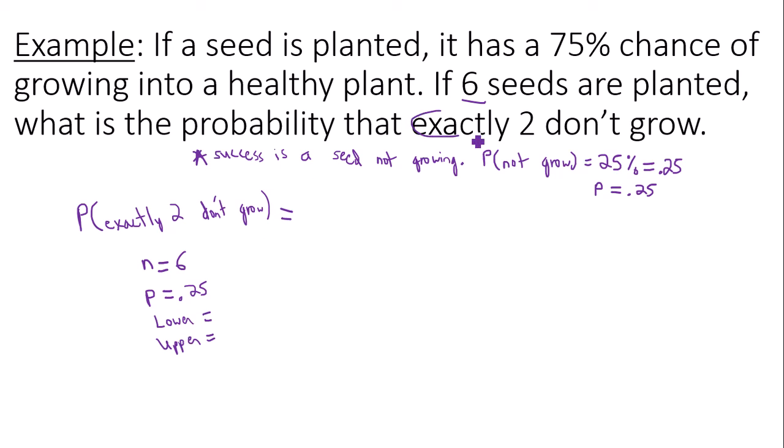So how many successes or how many seeds that don't grow are we interested in? We're interested in exactly two, just two, not three, not four, not five, not six, just two. So as a result, since you're only interested in two successes or two seeds not growing, the lower and upper bound are both the same. Anytime you deal with exactly a certain number, lower bound and upper bound are the same.